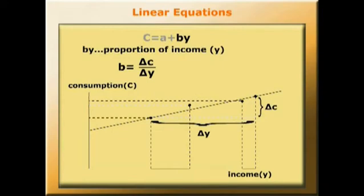In this case, B is positive. As income rises, consumption rises. And that term, delta C over delta Y, we first met in an earlier film when we were discussing multipliers.